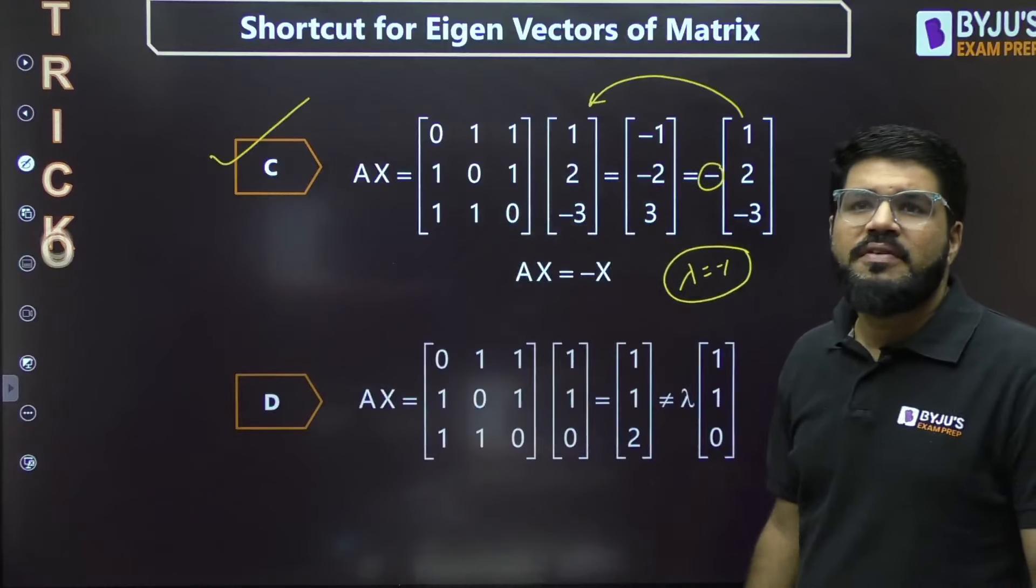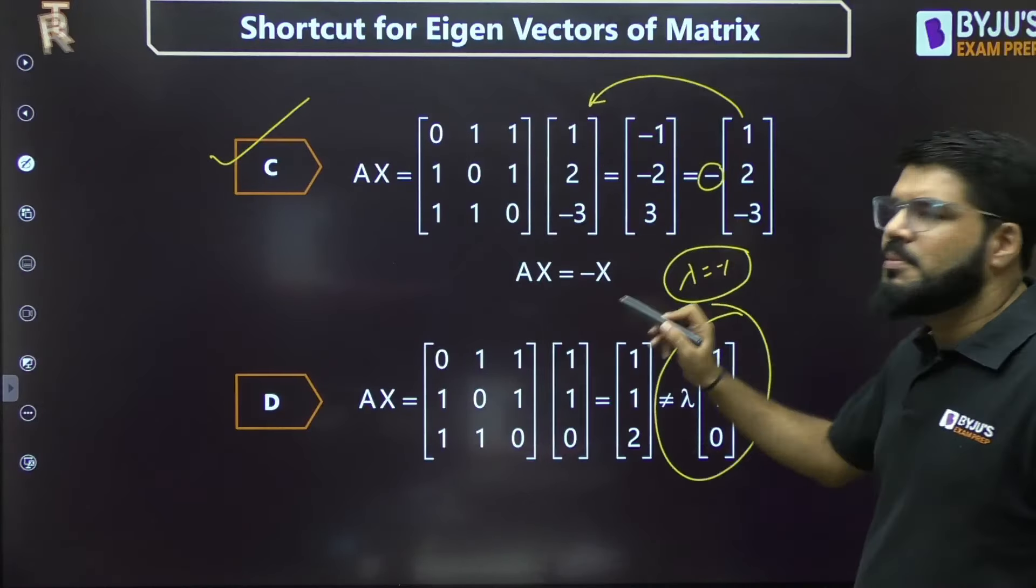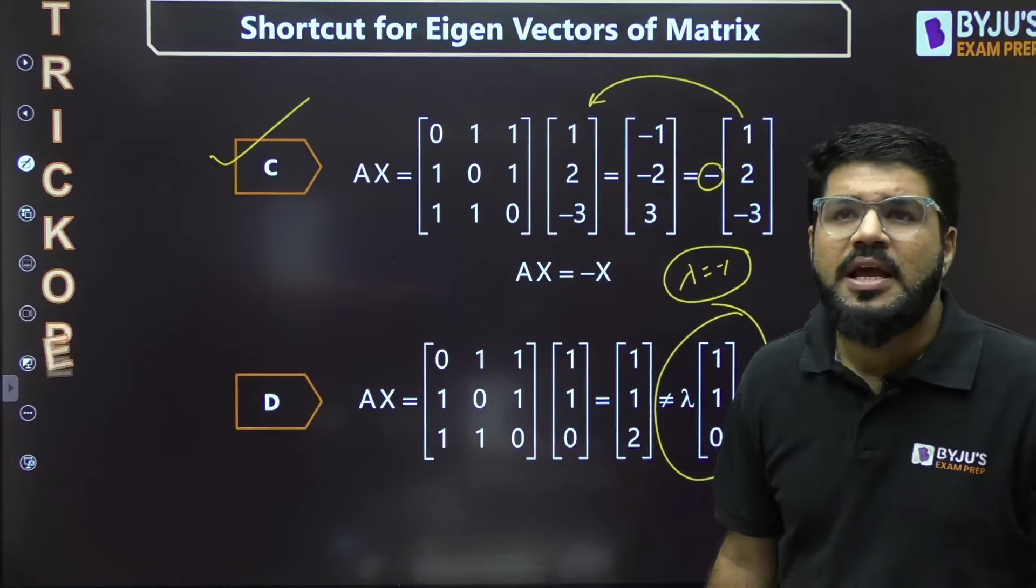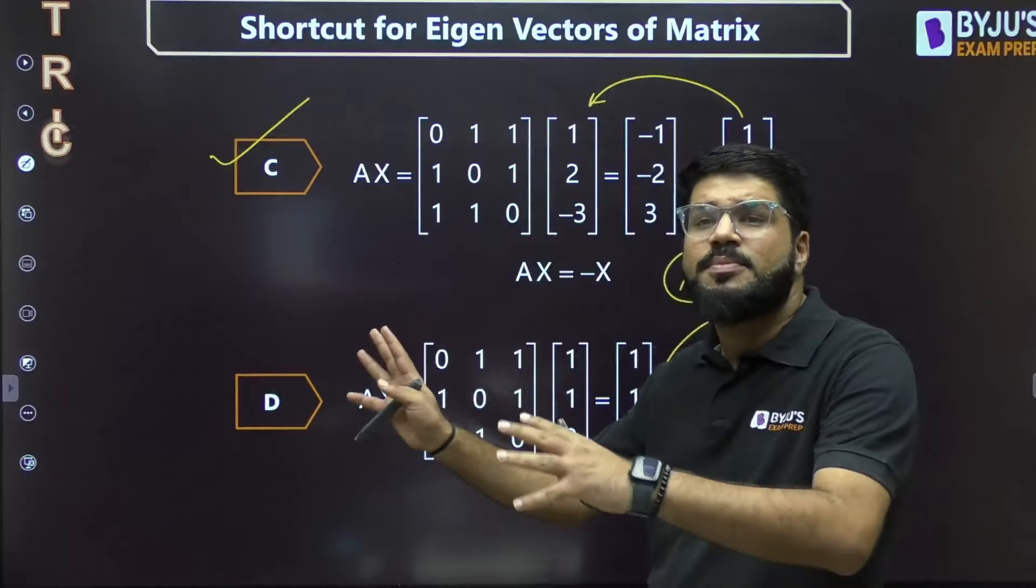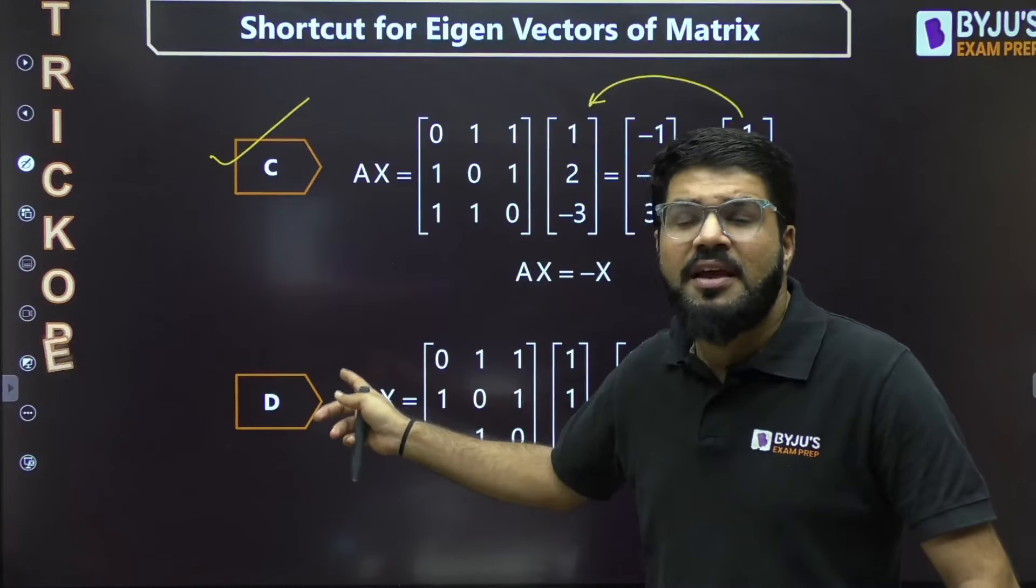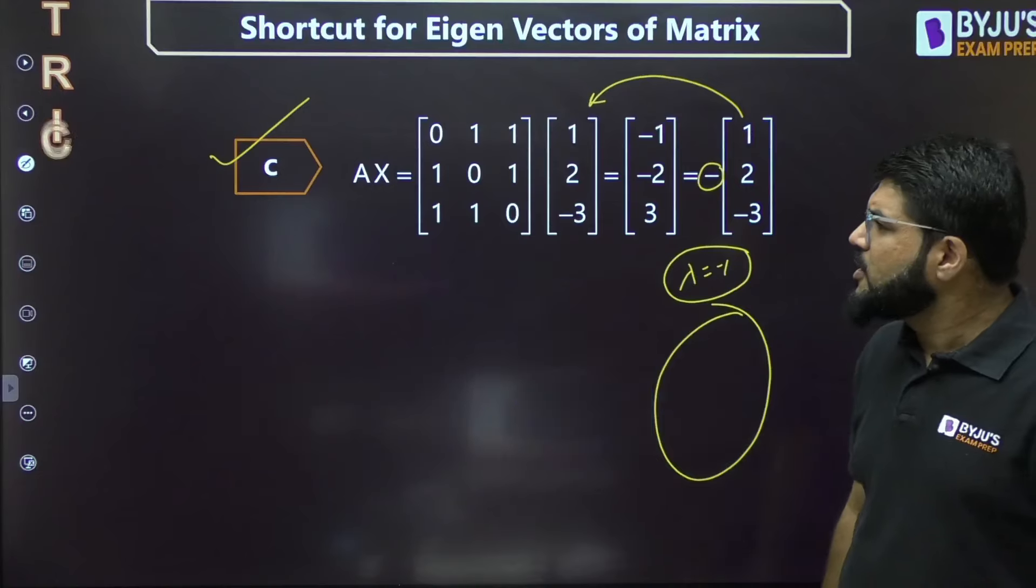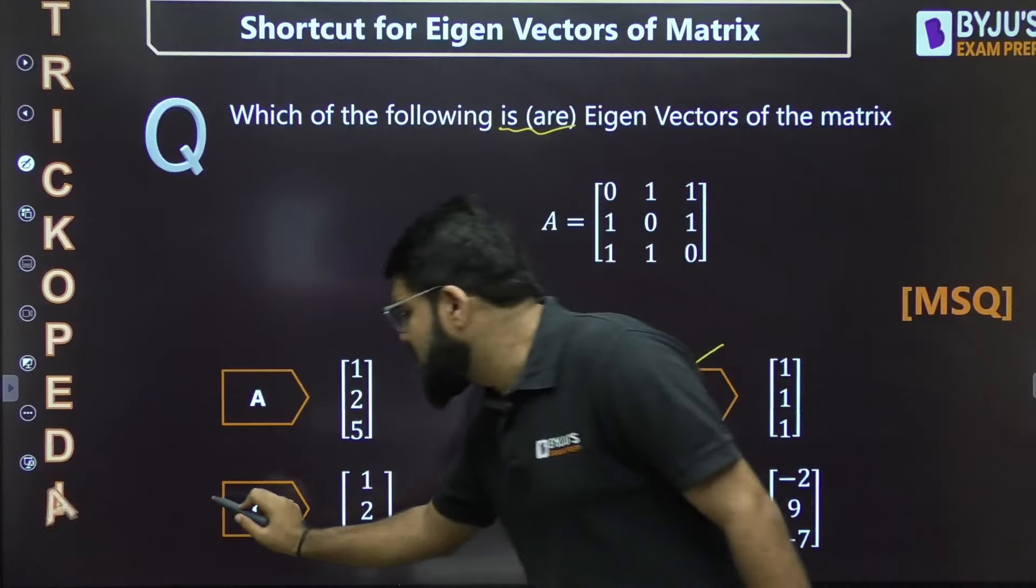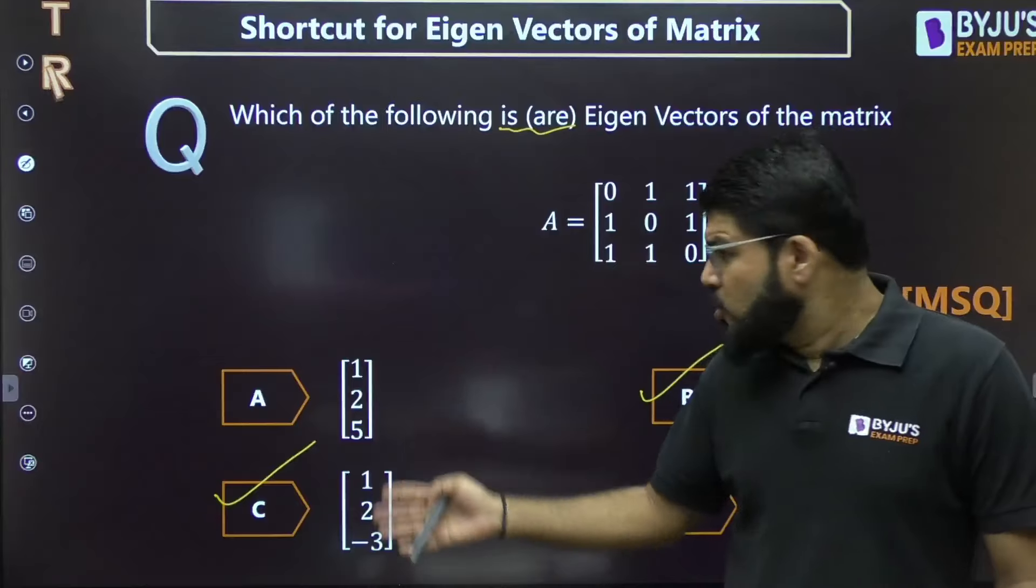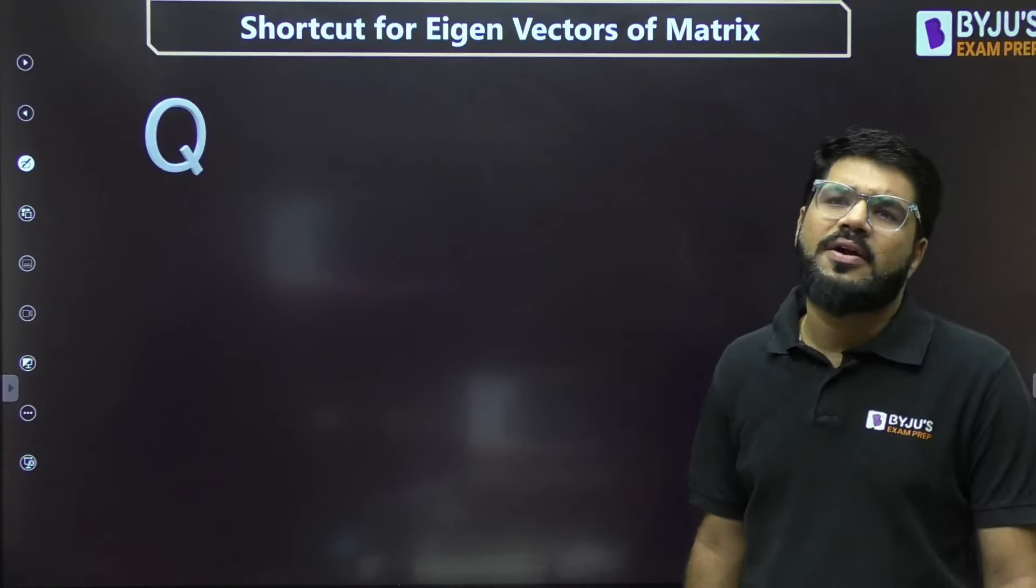In GATE 2021, 22, 23, almost every year there's been a question you can solve on this principle, whether second, third, or even fourth order. The correct answer for this multiple select question is options B and C. Can I solve even an entity question by this approach? Yes, why not? Let's have a quick look at another question.